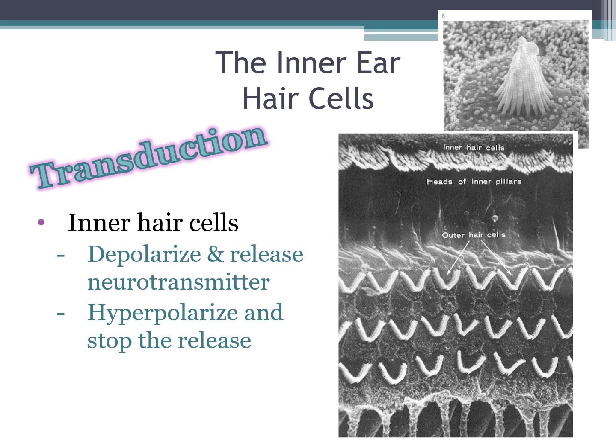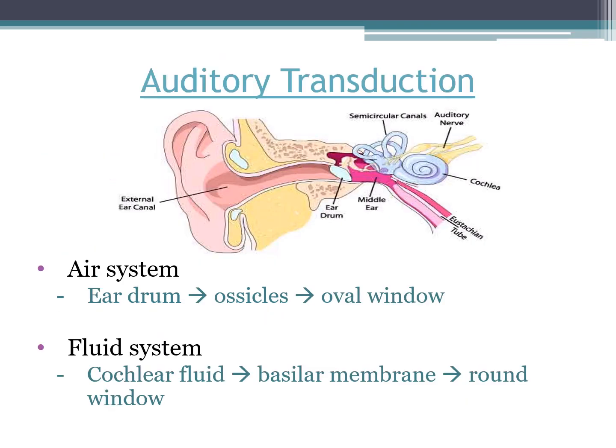It is the inner hair cells that are doing the job of transduction — this magical thing that turns aspects of our world into something the brain can understand. Those inner hair cells are going to depolarize and release neurotransmitter, and hyperpolarize and stop the release of neurotransmitter. They're actually releasing glutamate onto the auditory nerve. There's a linked video on auditory transduction with good animations that I'll strongly recommend.